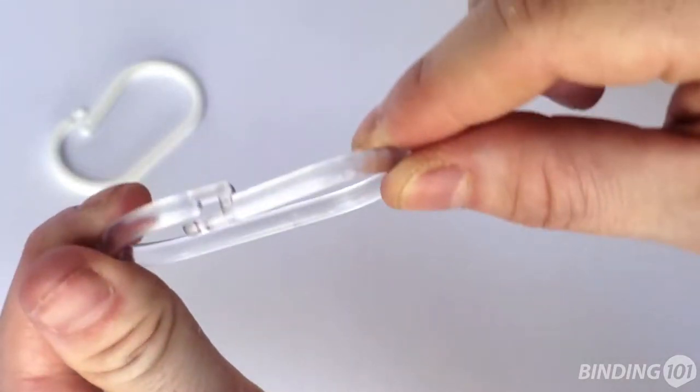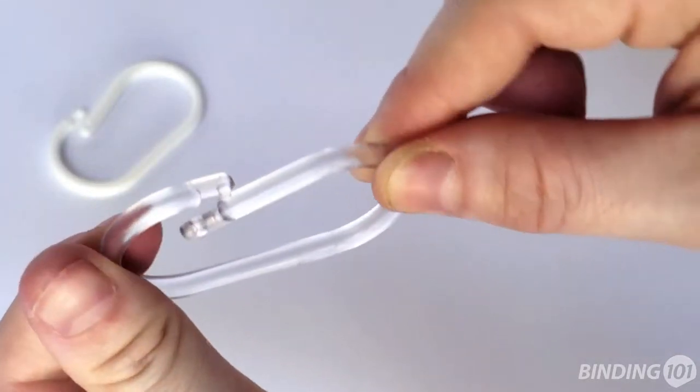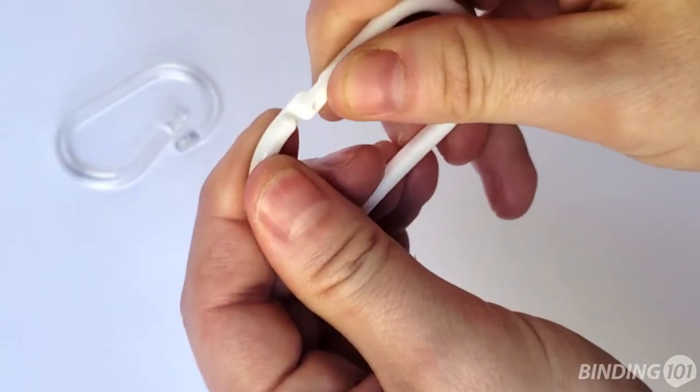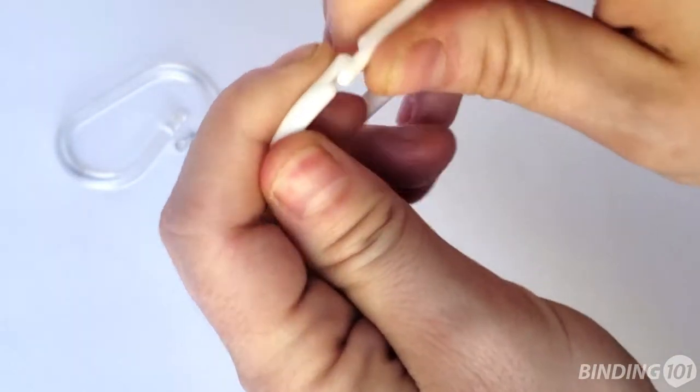Plastic oval snap-lock binding rings are an affordable and convenient way to bind together loose sheets and swatches, to use for crafts, retail and pop displays, and so much more.